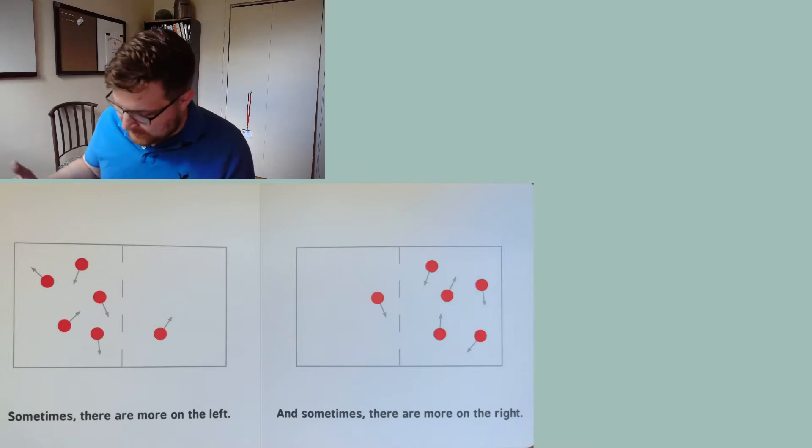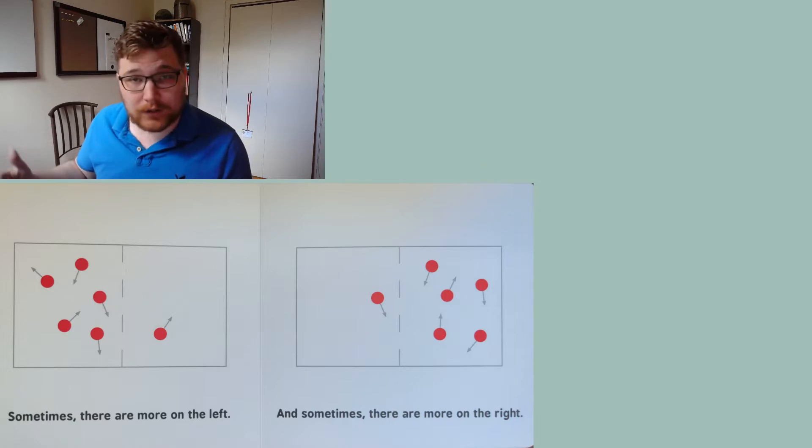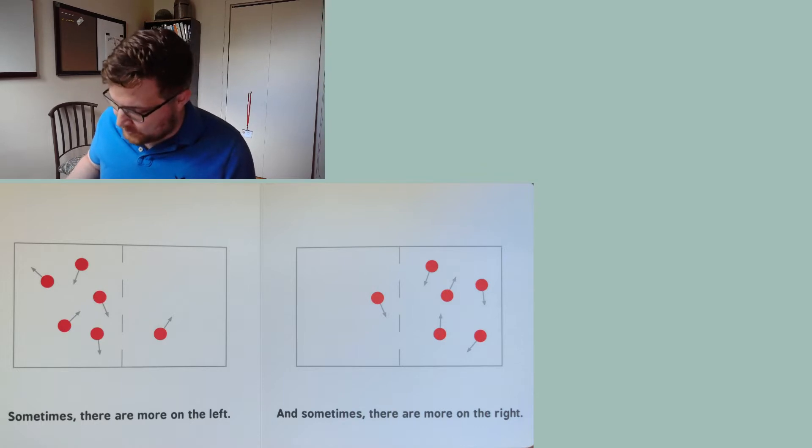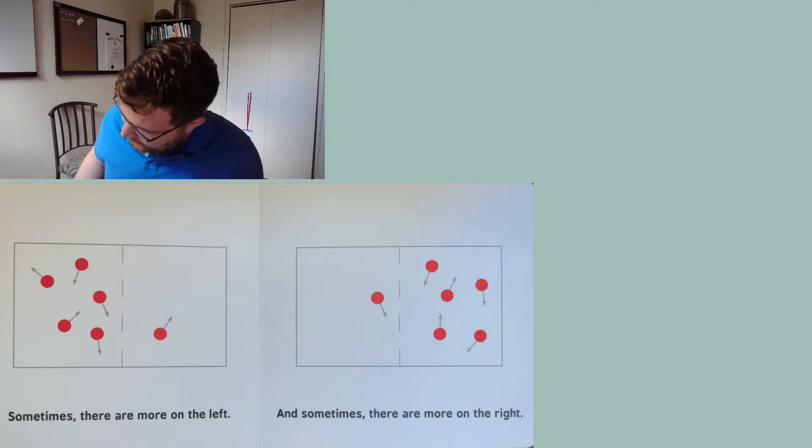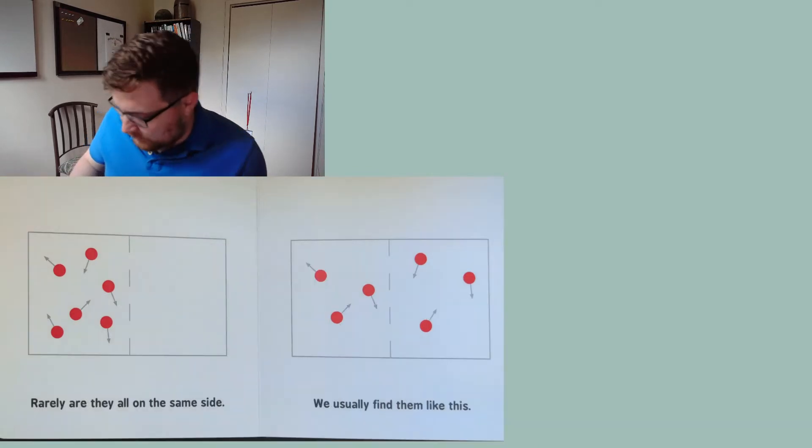So sometimes there are more on the left, very atypical configuration of course. So it looks like we're going for here our microstate is how many balls are on the left and how many balls are on the right. All these balls are sort of moving around but we're not really accounting for that.